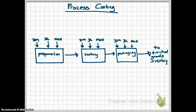Finally, when those goods are sold, they get transferred to cost of goods sold. So the flow of products for a process costing company goes from raw material inventory into the first production process department, then from one work-in-process inventory to the next, through as many departments as the company has, and from the final department — packaging in this case — it goes to finished goods inventory, and then once products are sold, to cost of goods sold.